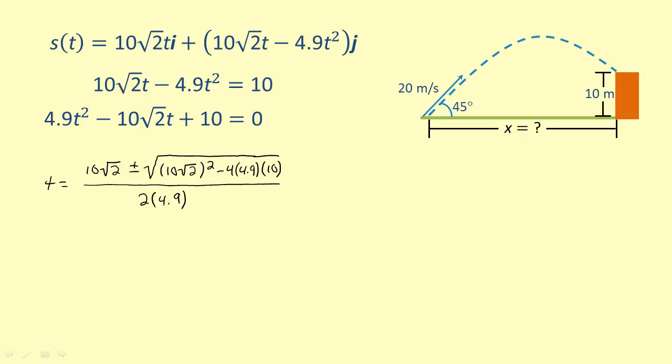If we simplify this and approximate it, we get t is approximately equal to 1.24 and 1.65. This means that the ball will be 10 meters above the ground 1.24 seconds after it is thrown and 1.65 seconds after it is thrown.